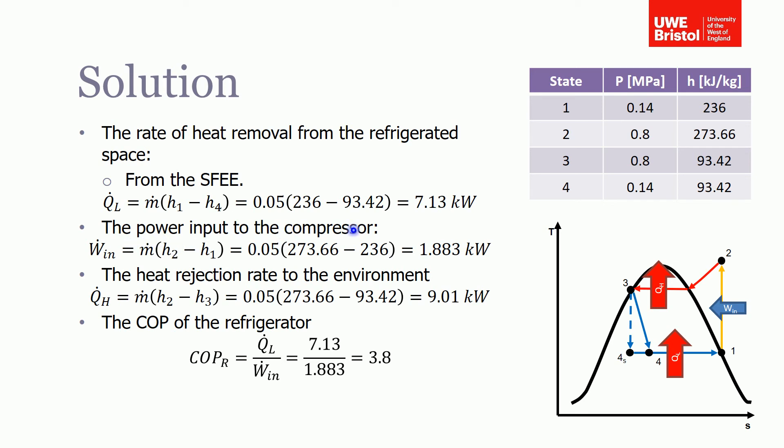The power input to the compressor, we do the same thing between 1 and 2. There's no heat supplied, so the work is equal to the change in enthalpy times the mass flow rate. If we plug those numbers in, it gives us 1.883 approximately kilowatts.